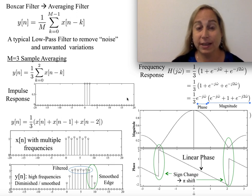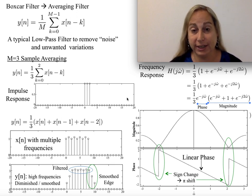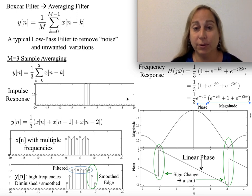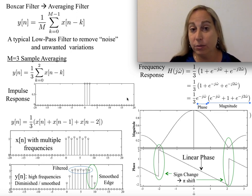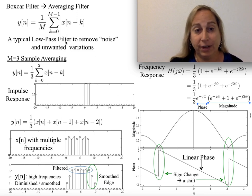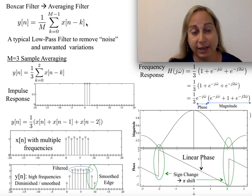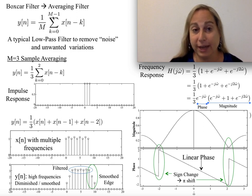A typical approach for this is to take an input set of data or an input waveform and sample it a lot more than you have to, knowing there's variability maybe due to noise or sampling or whatever, and then average through it — running what is often called a moving average — because we'll use an FIR filter of the form where we average the m samples from k equals 0 to m minus 1.